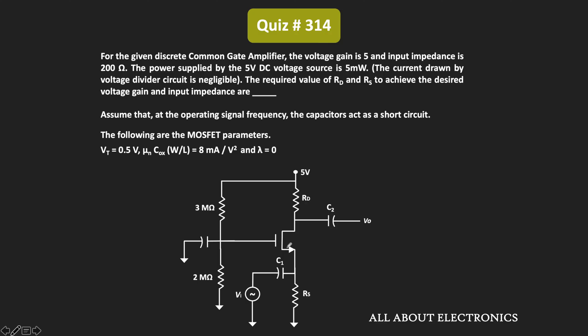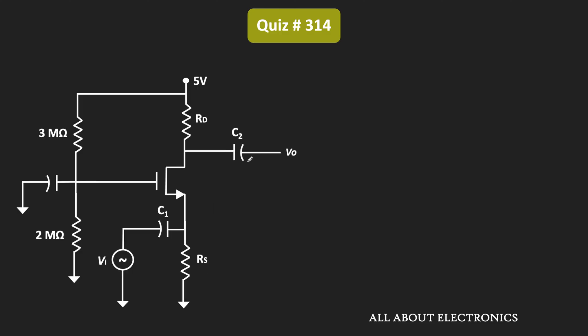We have also been given the required MOSFET parameters. To find the voltage gain and the input impedance, first we need the value of the transconductance gm, and to find that we need to do the DC analysis.